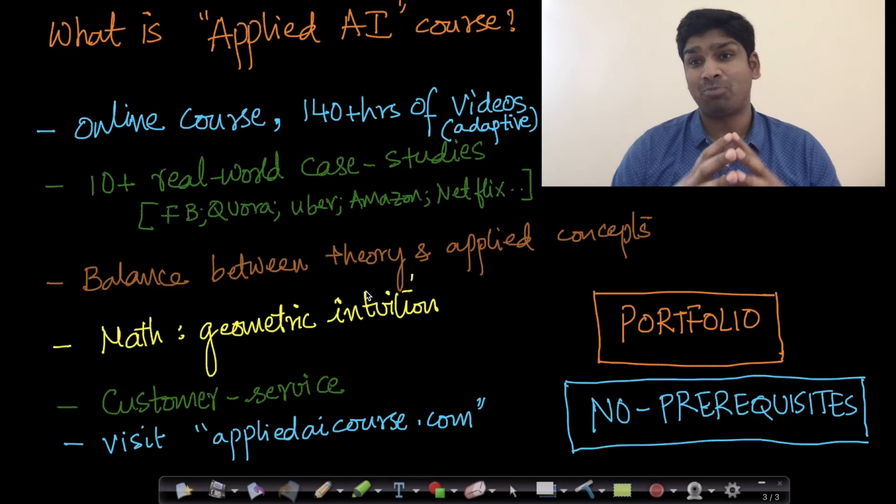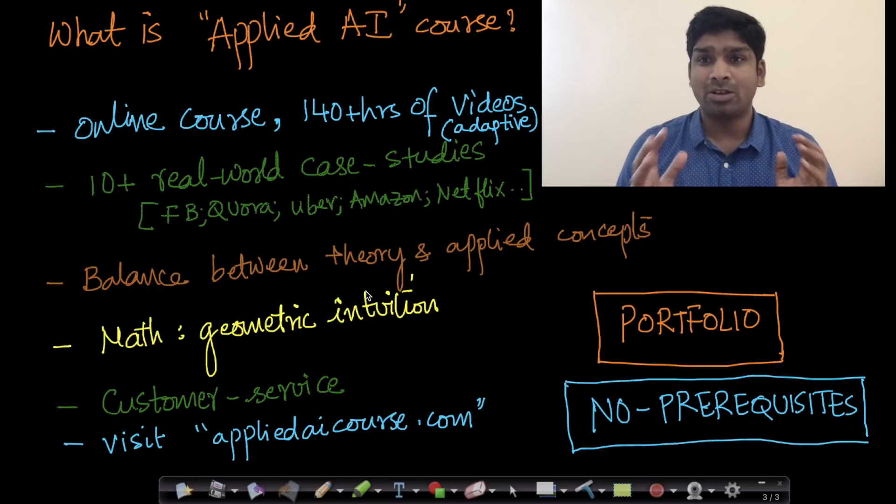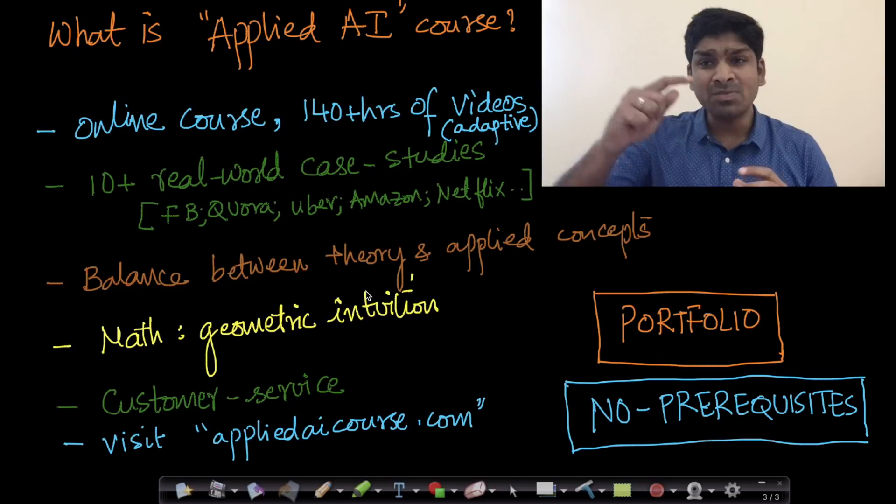One of our very popular courses is the Applied AI course. The course is an online course with about 140+ hours of video content, and most of this video content is adaptive, by which we mean that suppose if there's a video...